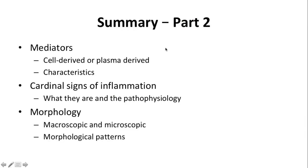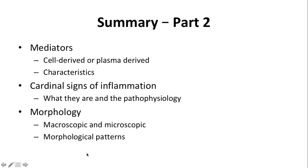To quickly recap part 2 of this lecture: we talked about mediators, where they come from and their characteristics; we talked about the five cardinal signs of inflammation and their underlying pathophysiology; and we covered the gross and microscopic morphological features of acute inflammation, which are manifestations of the various events occurring in the process of inflammation. Four morphological patterns were also explained, seen at various sites of the body. See you again in part 3, which will cover outcomes and systemic effects of inflammation.